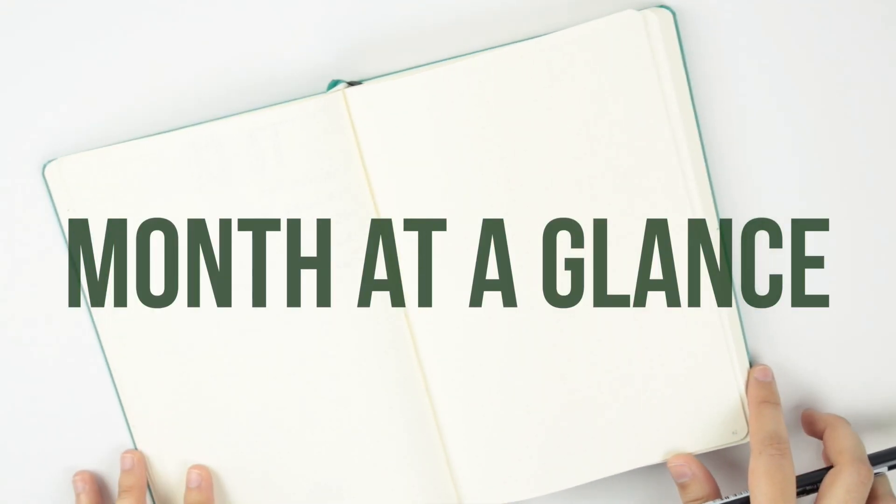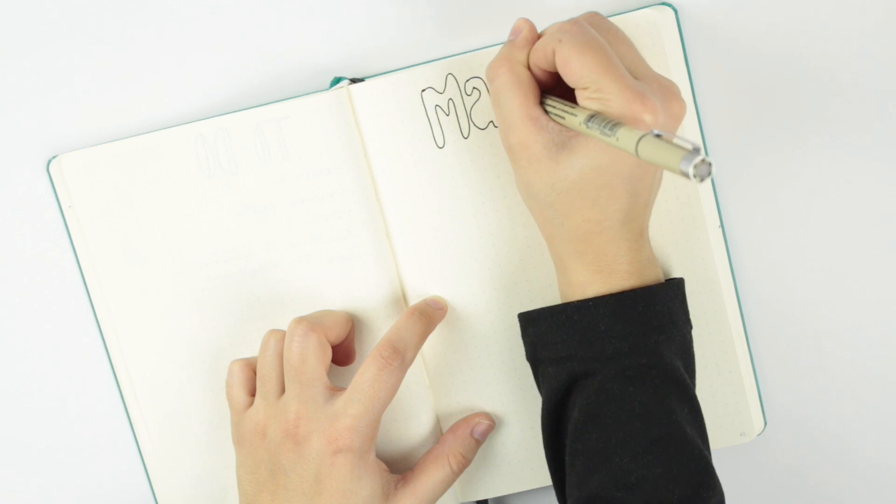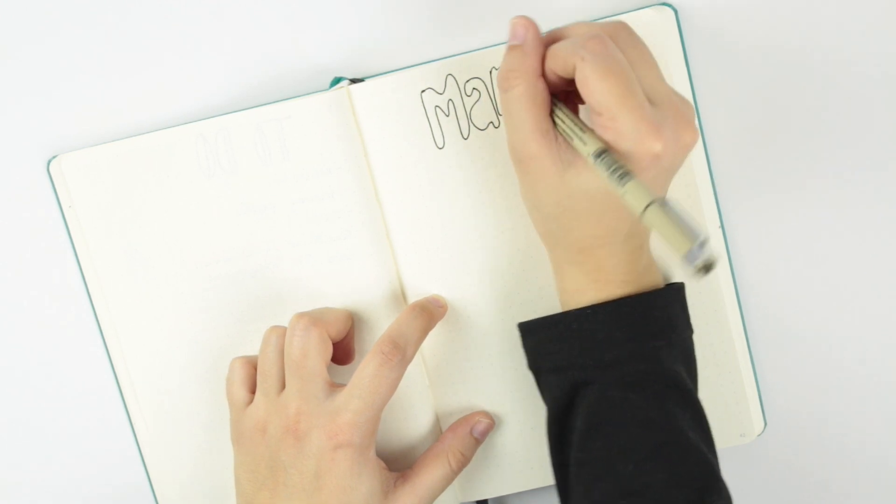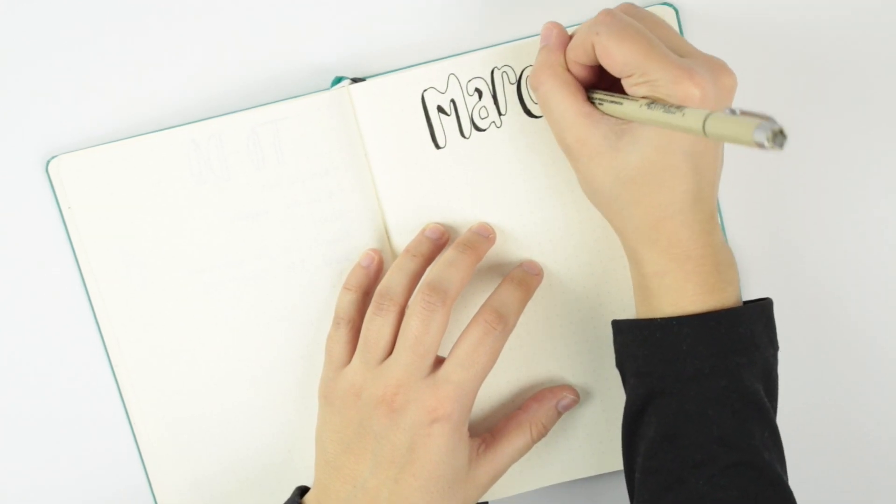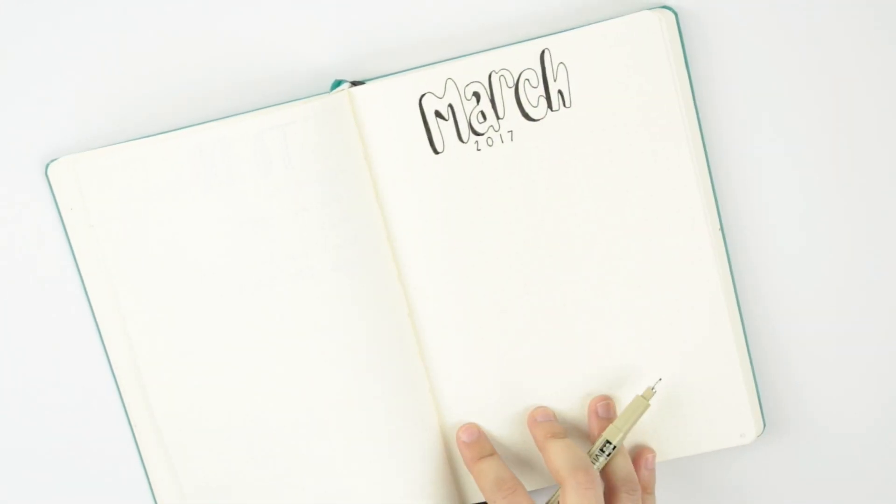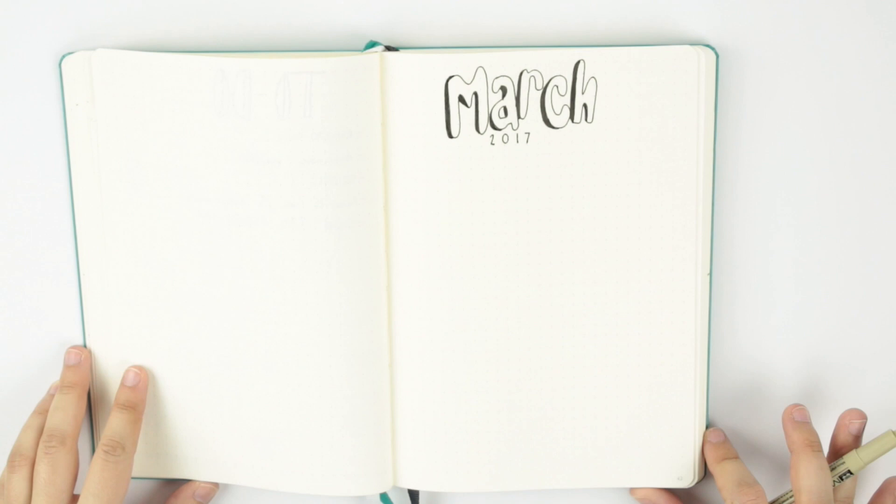So as always I'm gonna get started with my month at a glance, so let's get going. I'm trying bubble letters for the first time, so if this looks horrible we're just gonna go with it. Well I have to admit that's not the worst thing I've ever drawn in this journal, so I'm pretty happy with that.